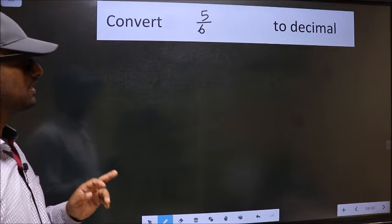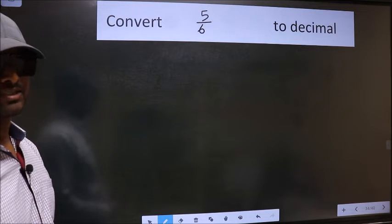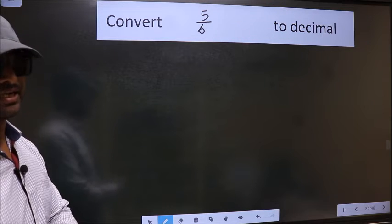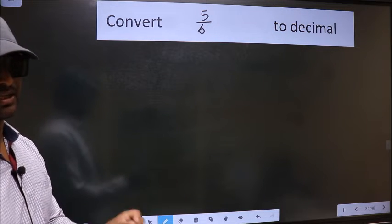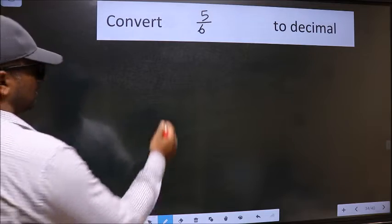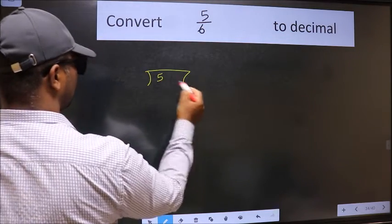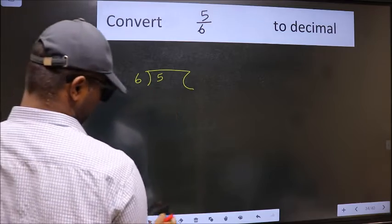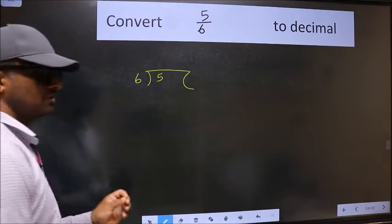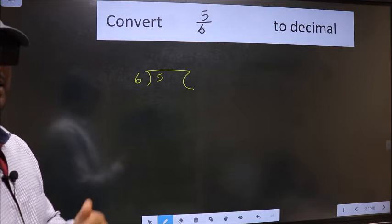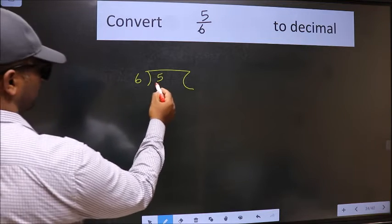Convert 5 by 6 to decimal. To convert to decimal we should divide, and to divide, we frame it this way: 5 here and 6 here. This is step 1.